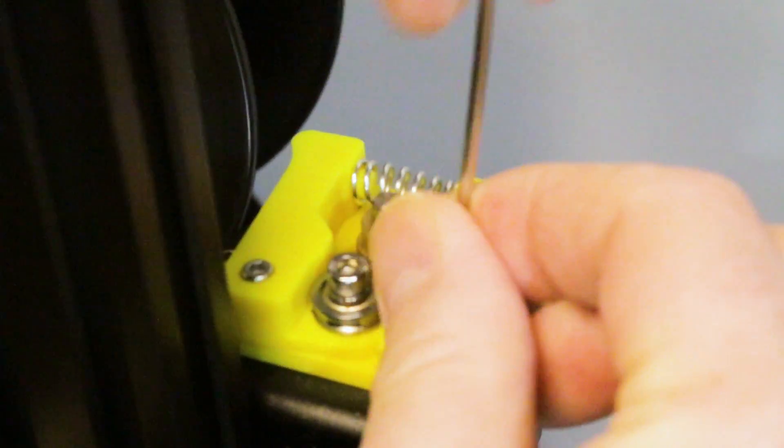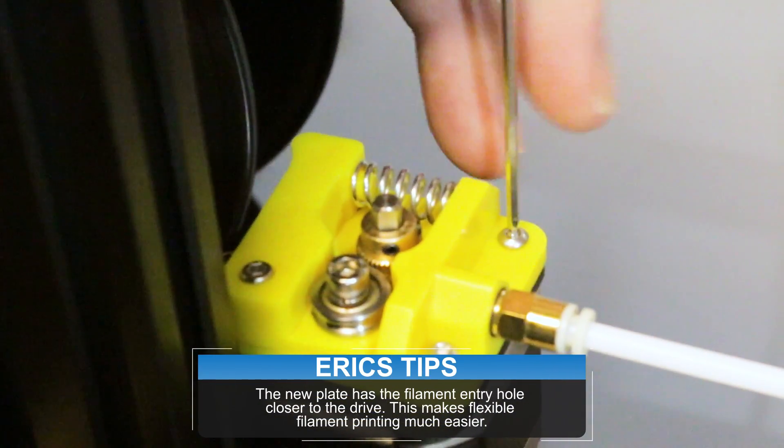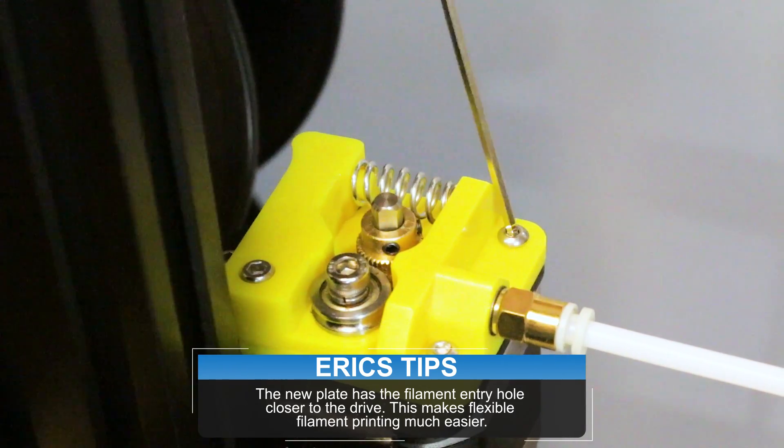To get started, back the filament out of your extruder and loosen and remove all the screws holding it in from the top.